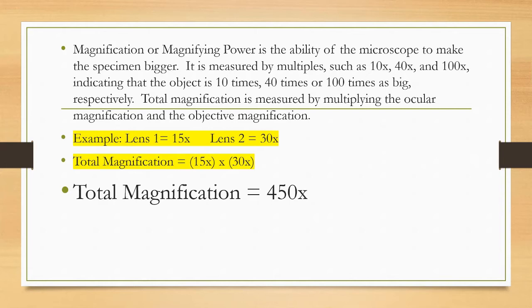For example, if lens 1 equals 15x and lens 2 equals 30x, the total magnification is 15x times 30x, which equals 450x.